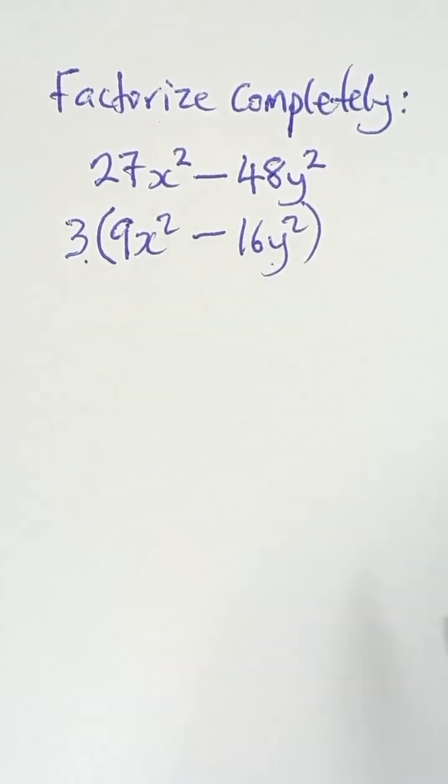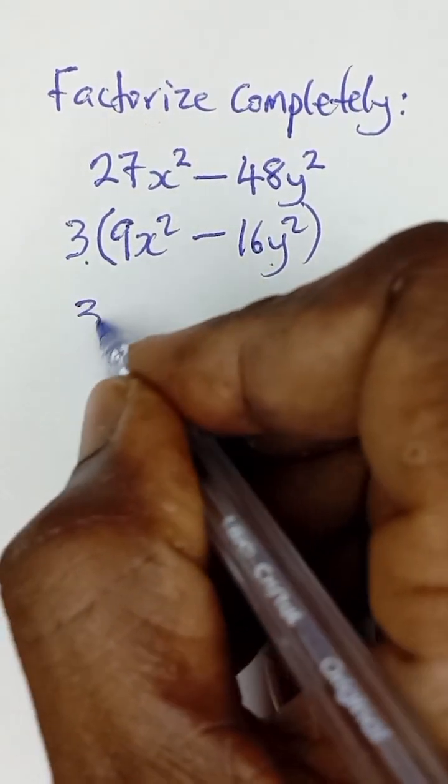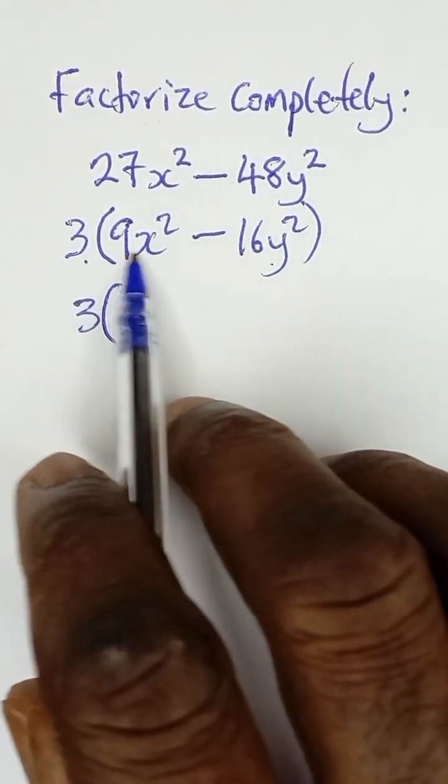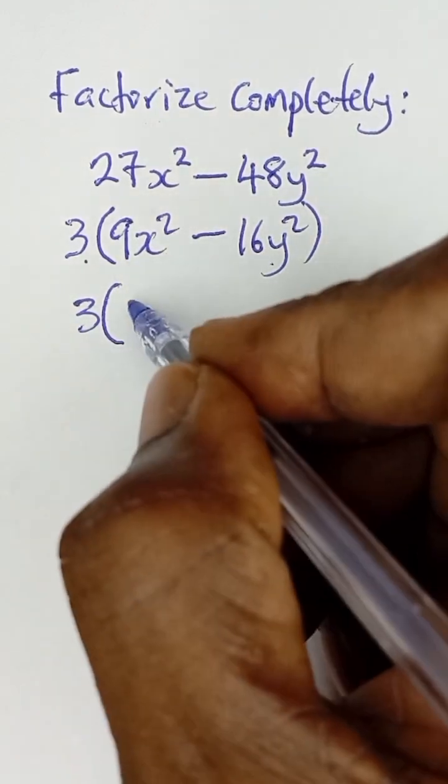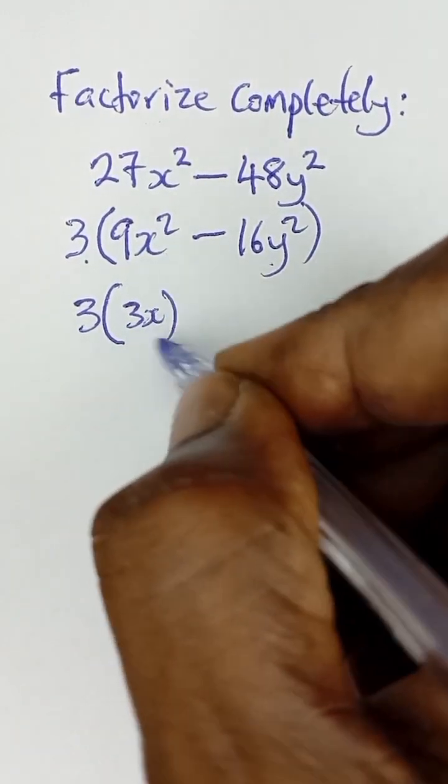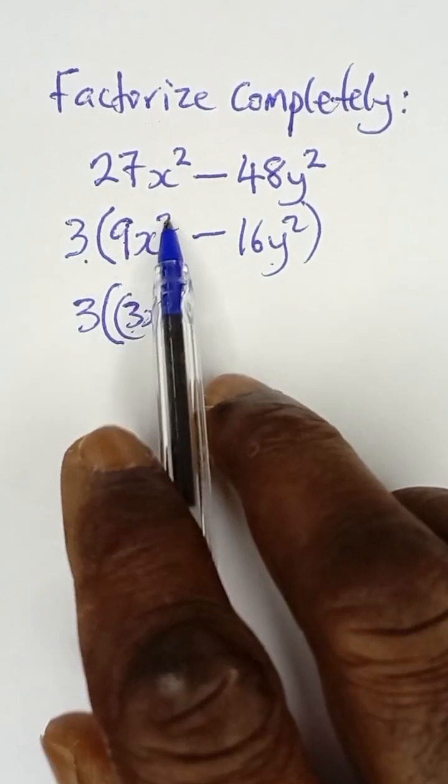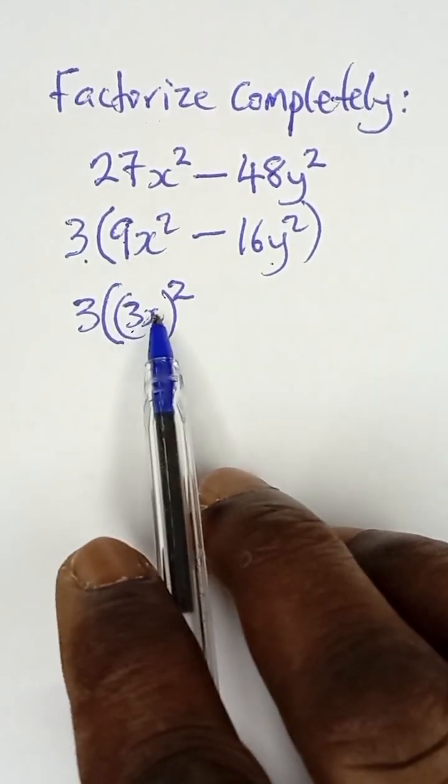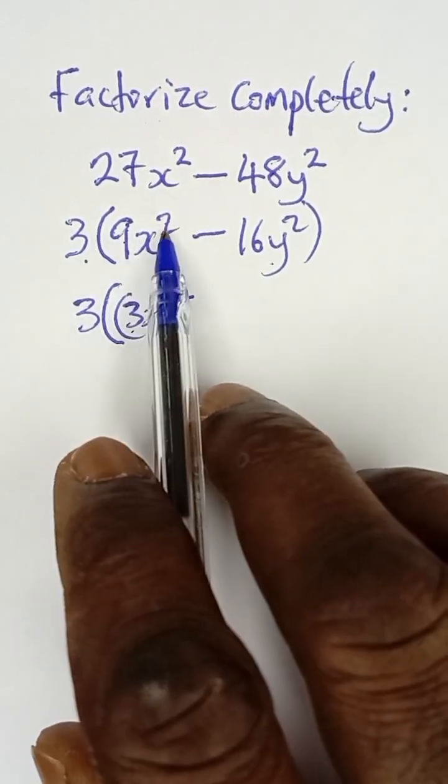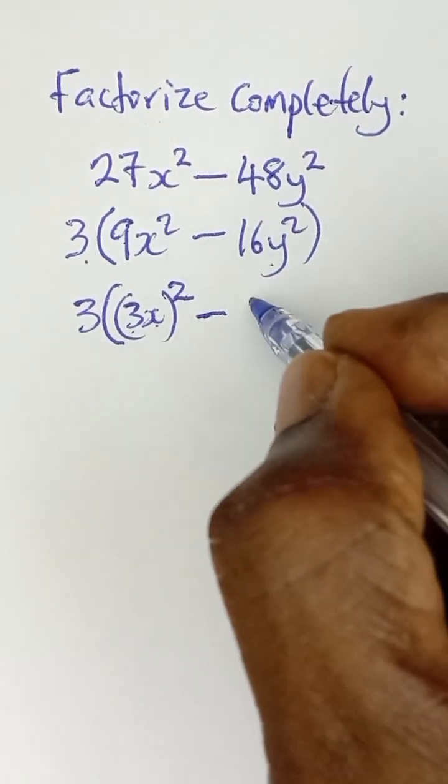So I have 3. Now this 9x² can be expressed as (3x)² because the square root of 9 is 3, the square root of x² is x, so that when you expand this again it takes you back to 9x². Similarly, this can be expressed as (4y)².